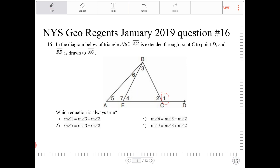So angle 1 here is an exterior angle to triangle ABC, and angle 4 is an exterior angle to triangle ABE.